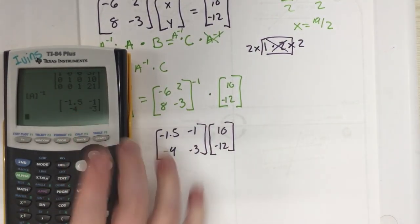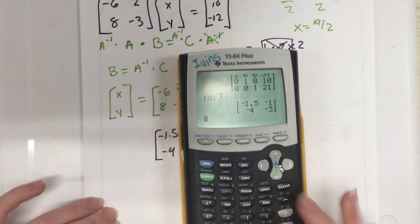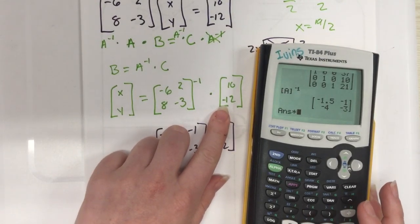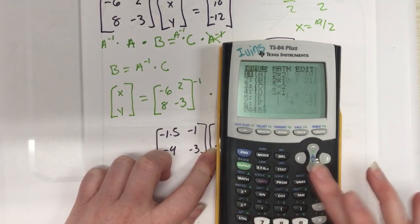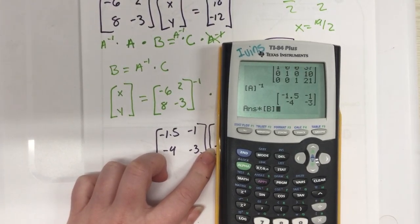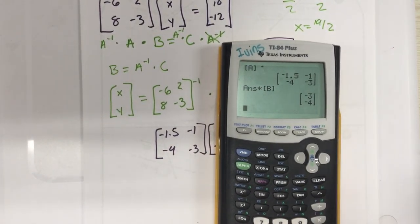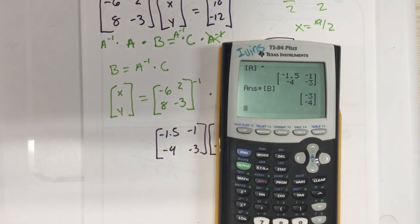I'm going to take this answer, this matrix that I have right here, and multiply that by what we put in. [10, -12] was matrix B, so go right there and I hit enter. And there's my answer: it is [-3, -4].